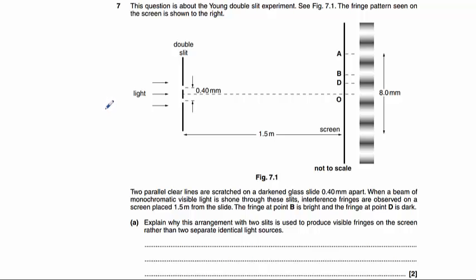Question number seven is about the Young's double slit experiment. A beam of monochromatic visible light is being shone through a couple of slits and producing a pattern of fringes on a distant screen.